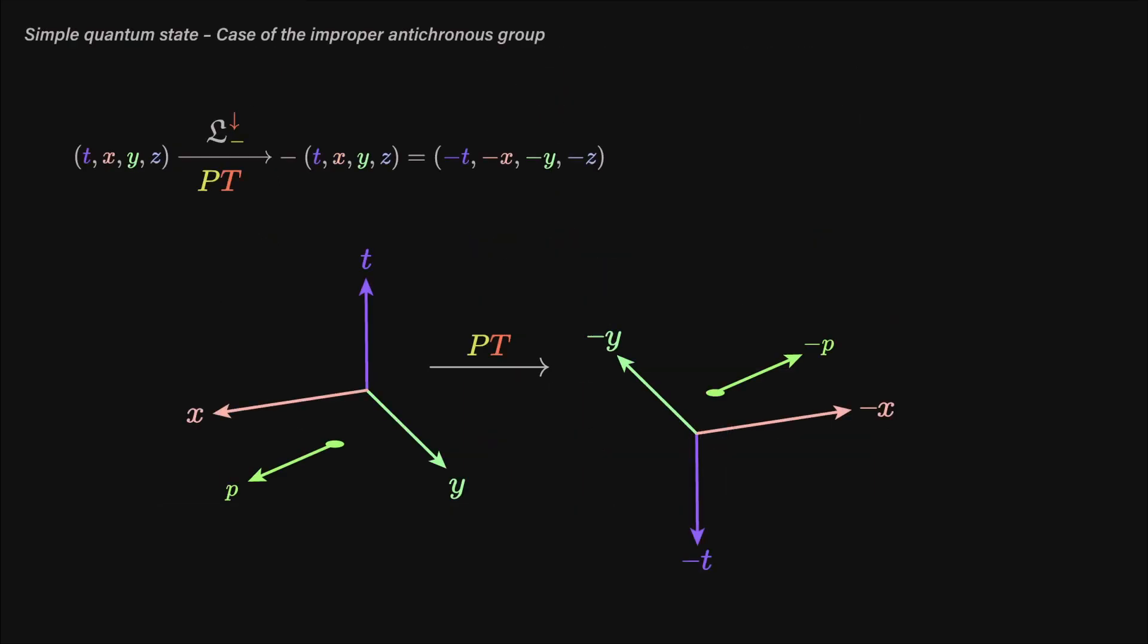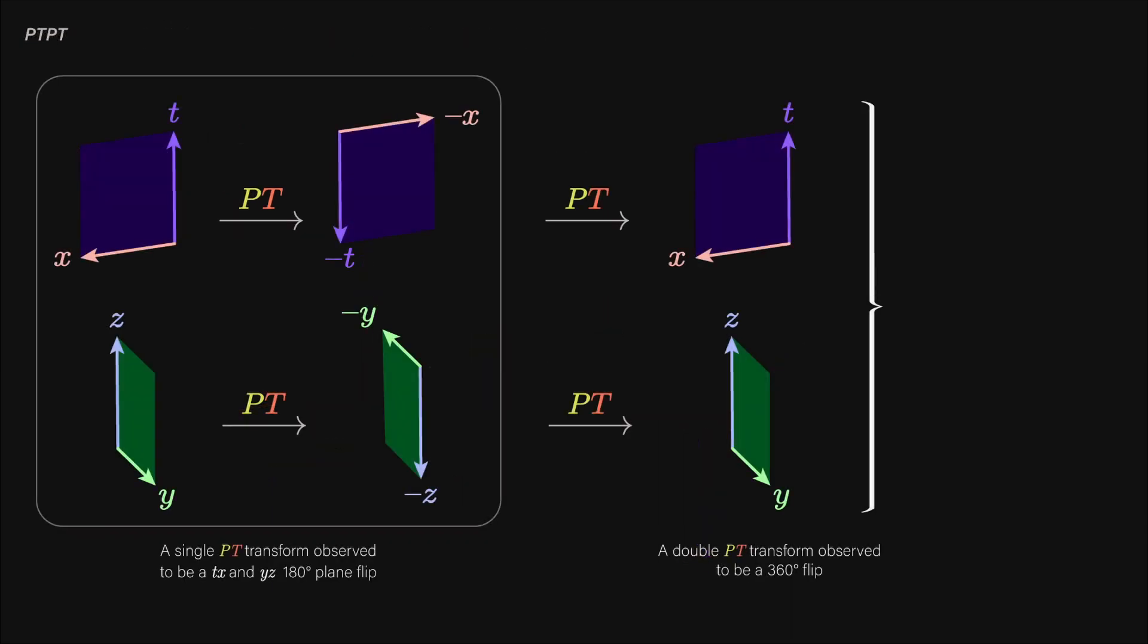Suppose now we apply an improper antichronous transformation, which is the last group we need to see. This is equal to applying a PT transformation, and it flips all components. Algebraically, if we do this again, we end up with a PTPT operation, which is equal to a PPTT operation, and that's P², which is 1, and now we have our TT, which is ±1. But notice PT is exactly just having -t-x-y-z directly, which is a flip in the tx plane and a flip in the yz plane, which is a 180-degree rotation.